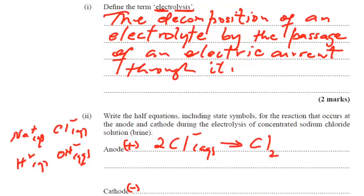And that would give us 2Cl- aqueous liberating or giving chlorine Cl2 gas plus 2 moles of electrons.